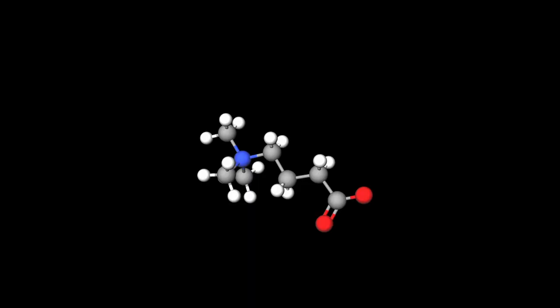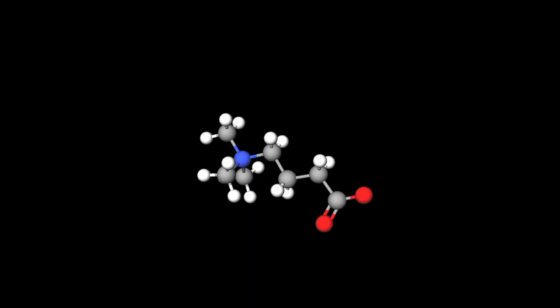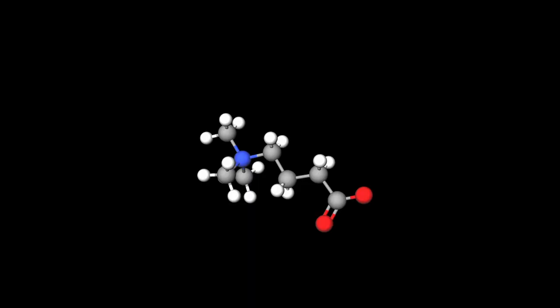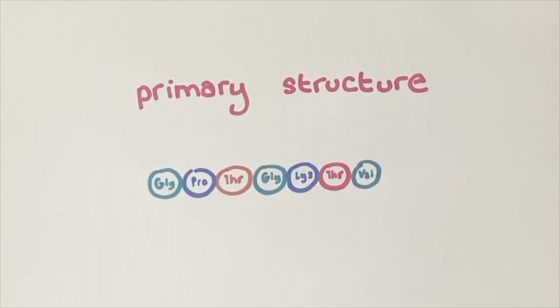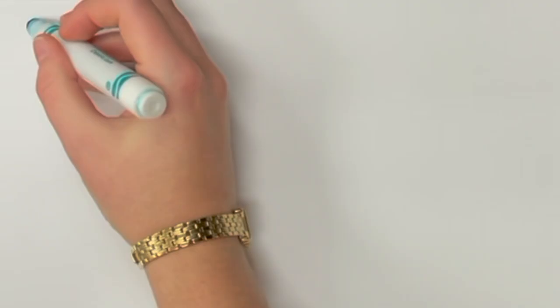They focus on one of the key concepts of chemistry: how the structure of molecules influences their function. In Chemistry 109, students learn how proteins are composed of building blocks known as amino acids. The primary structure of a protein refers to the sequence of amino acids.